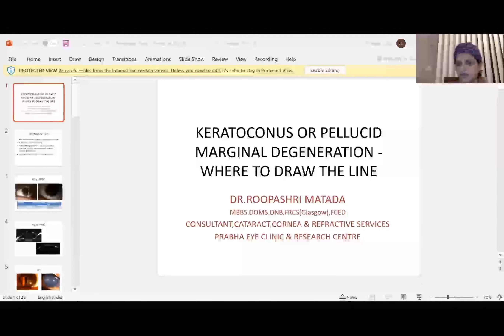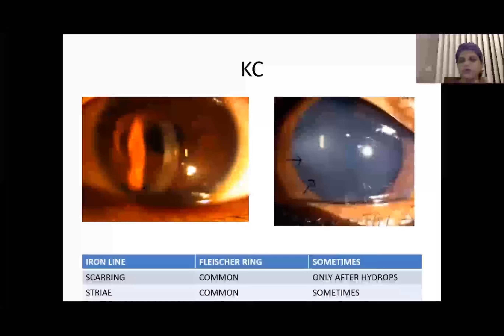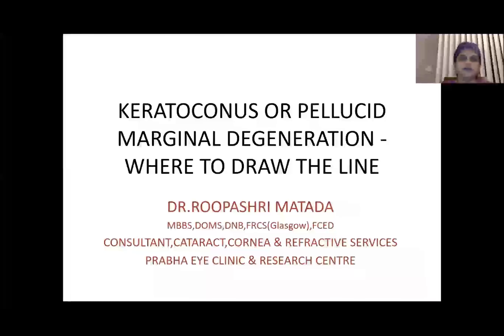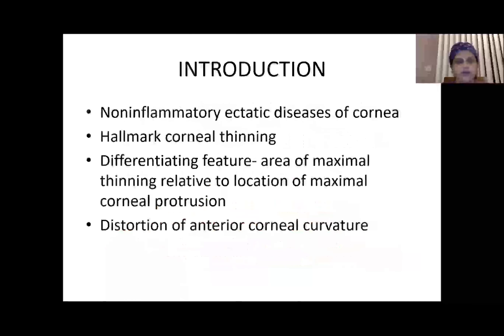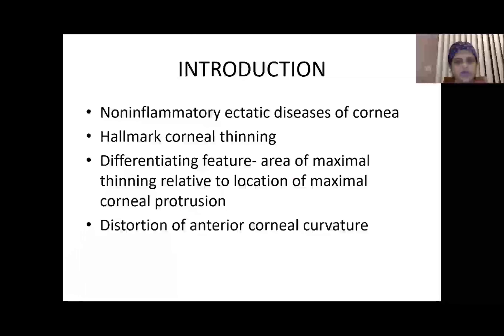Good evening everybody. At the outset I would like to thank COSCON and Dr. Elon for giving me this opportunity to present here. My topic for today is keratoconus or pellucid marginal degeneration — where to draw the line. Both are non-inflammatory ectatic diseases of the cornea, the hallmark being corneal thinning.